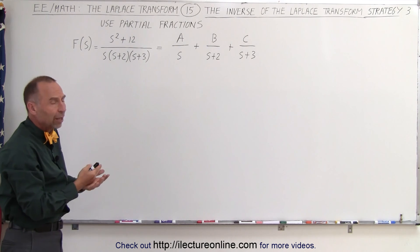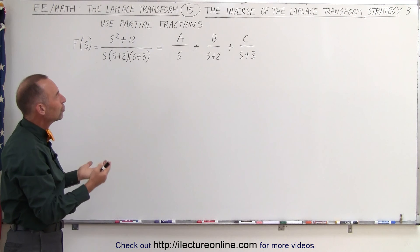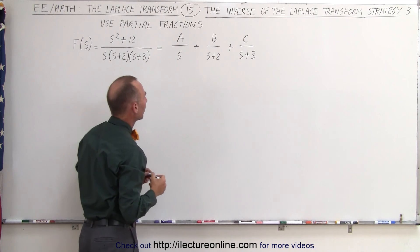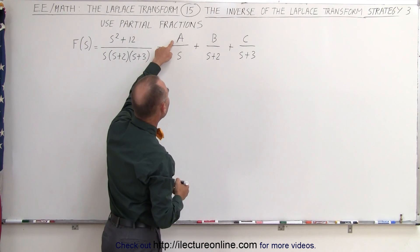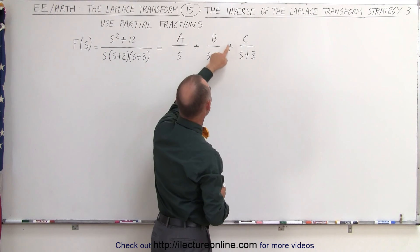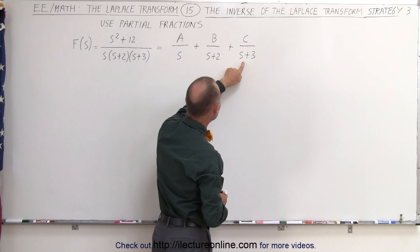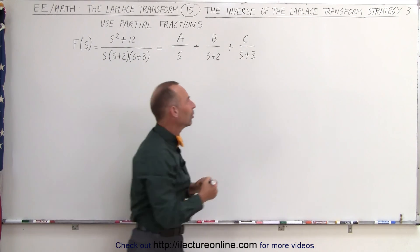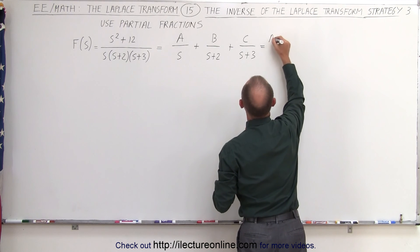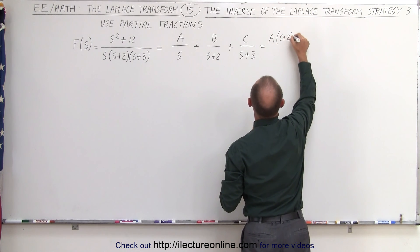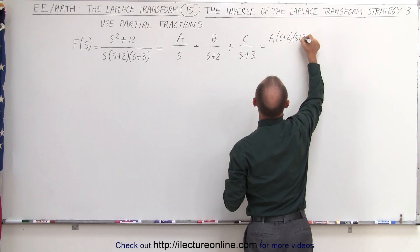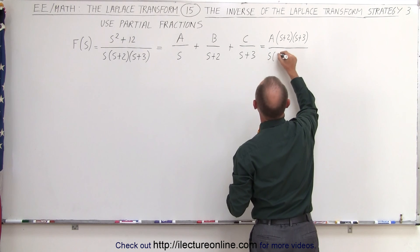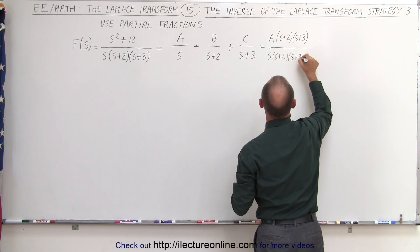First we need to find out what a, b, and c are equal to. In order to do that, we're going to write all of those over the same common denominator, like we have over here. That means we're going to multiply a times s plus 2 and s plus 3, multiply b times s and s plus 3, and multiply c times s and s plus 2. So this can be written as a times s plus 2 times s plus 3, all over the denominator of s times s plus 2 times s plus 3.